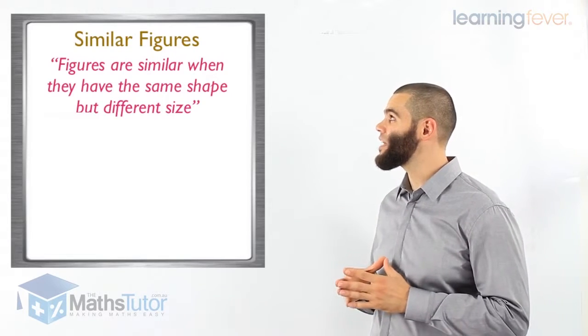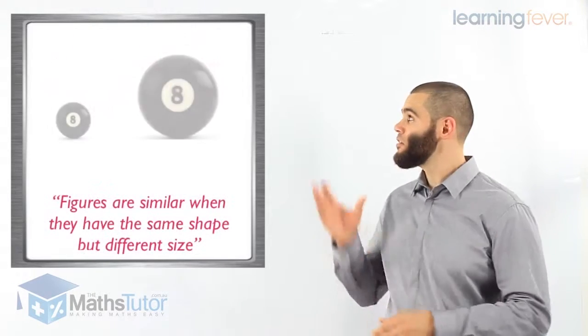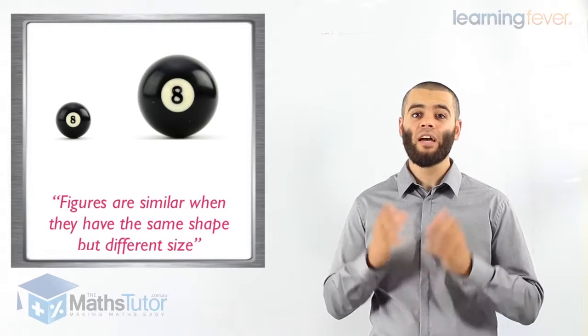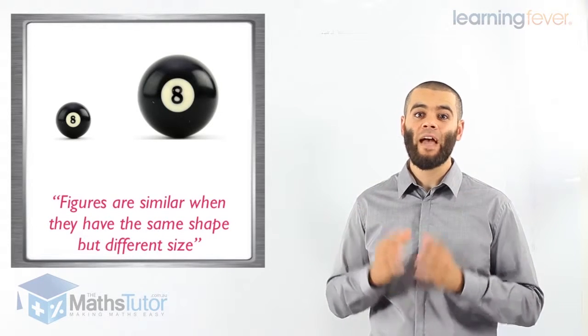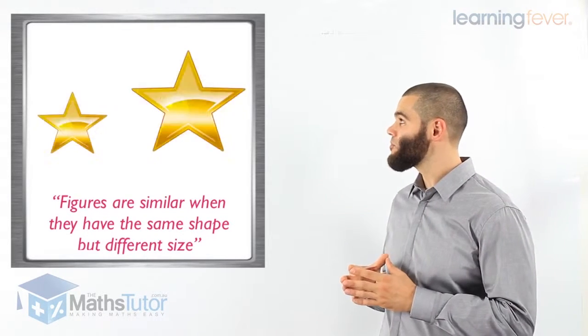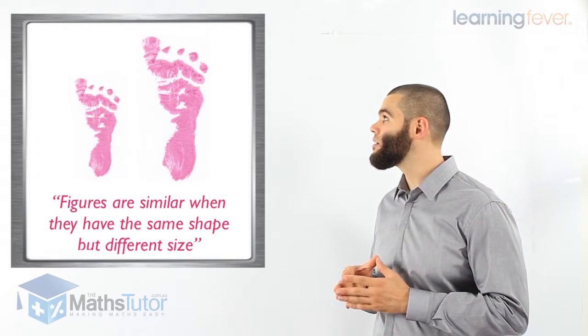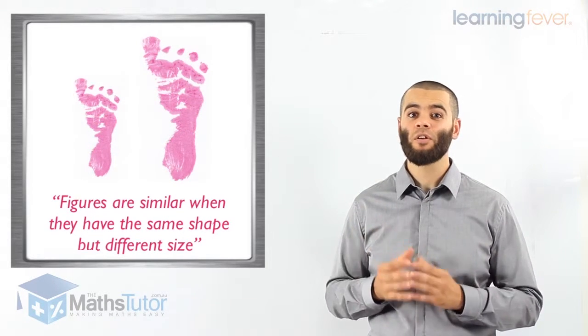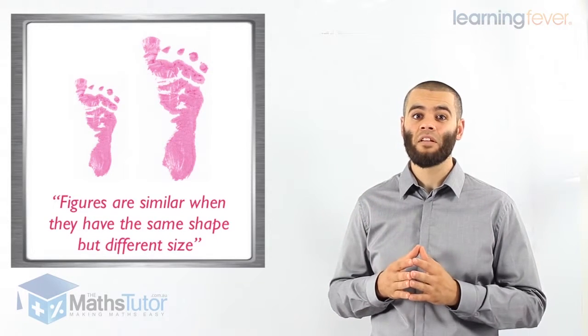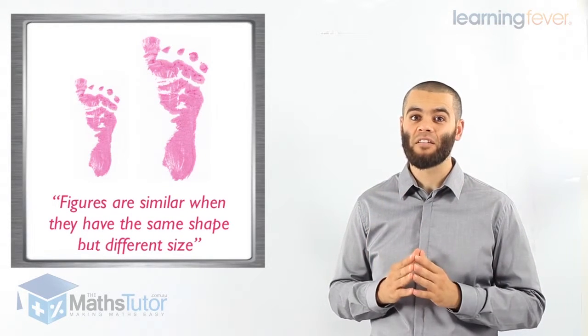Figures are similar when they have the same shape but they have different size. Looking at these diagrams here, we can see that we have a ball and we have another ball. They are the same shape — they are round — however, one of them is larger than the other; they have a different size. We look at this star and we have another star. They are the same shape but different size — one has been enlarged, one has been made smaller. They are similar figures. Then we have the footprint — once again, they are the same shape but just a different size. One has been enlarged, one has been made smaller. These are similar figures.